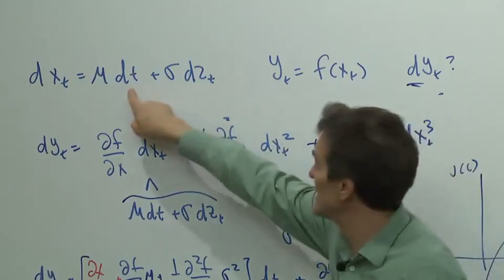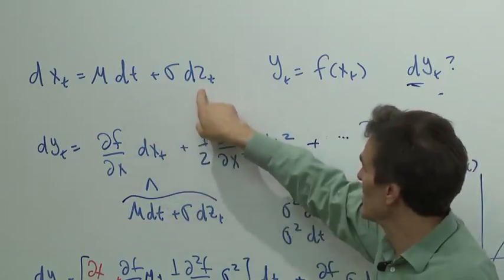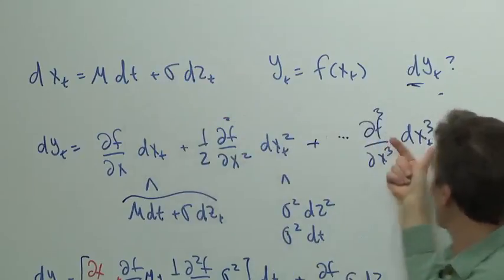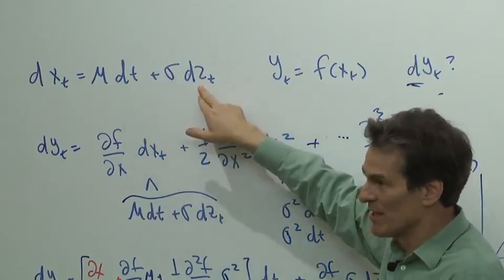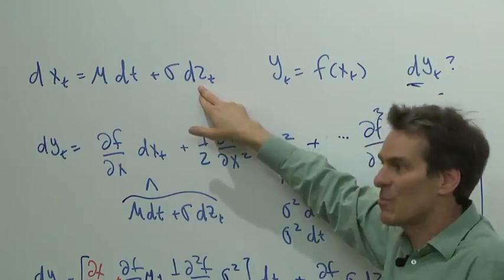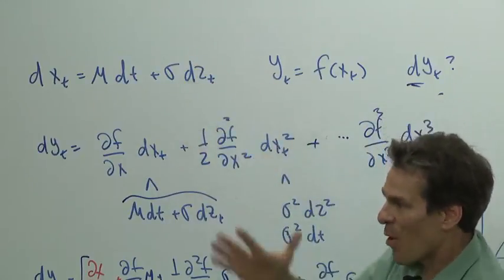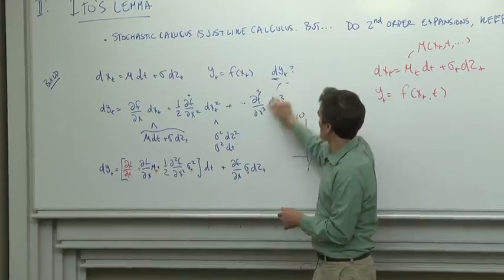But let's look at dx³. dx³ has in it a dt term, a dz term. The lowest order that we're going to have out of dx³ is dz cubed, which is of order dt to the 1 and 1 half. That is small compared to dt, and that's why that vanishes.